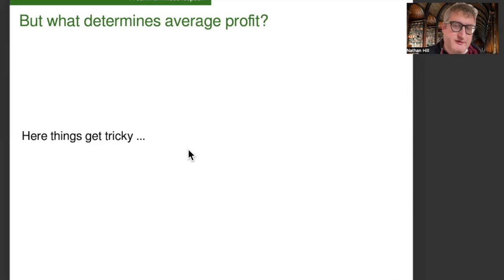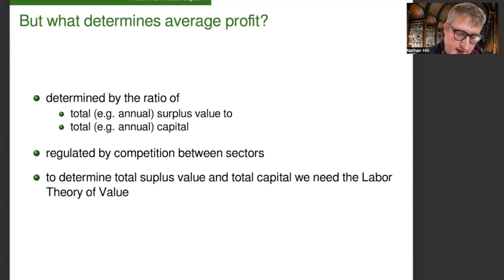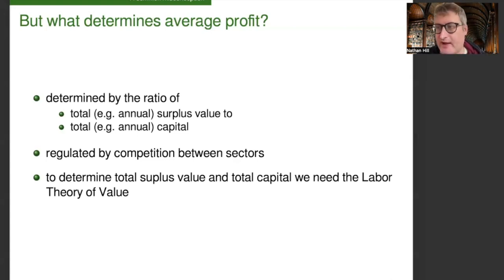But what determines average profit? Here things get tricky. The average profit is determined by the ratio of total annual surplus value to total annual capital. The average profit rate is regulated by competition between sectors — that's how it's enforced sociologically. So to determine total surplus value and total capital, we need to turn to the labor theory of value. And this is where we get to our third level of price: labor value.